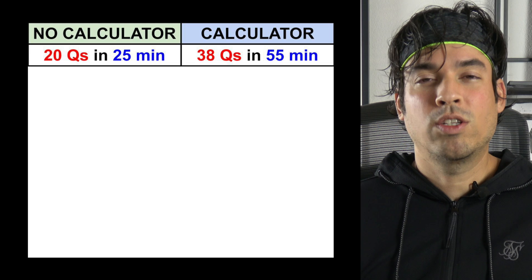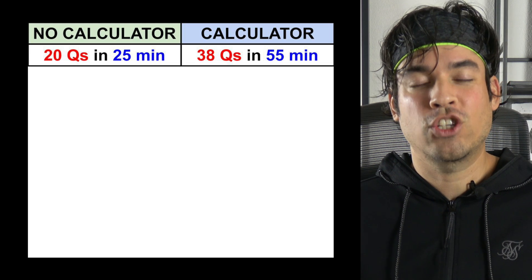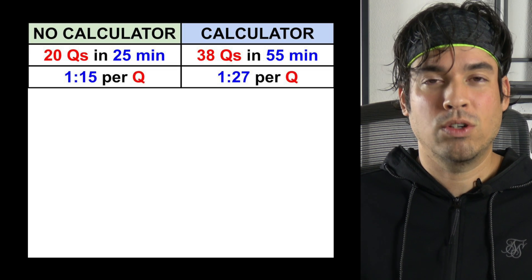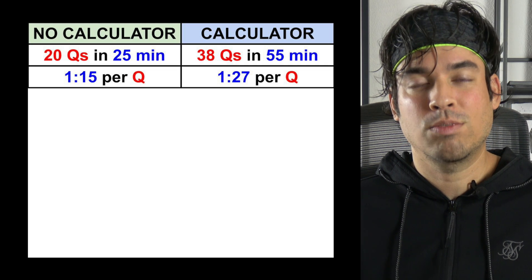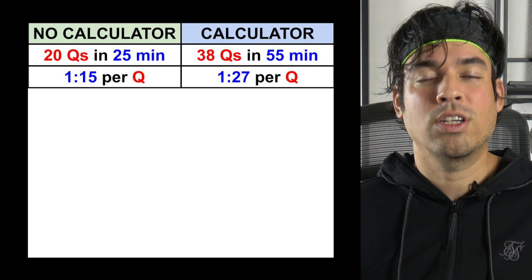In 55 minutes. When we talk about time per question on each section that roughly breaks down to for the no calculator section about a minute and 15 seconds per question and on the calculator section about a minute and 27 seconds per question.